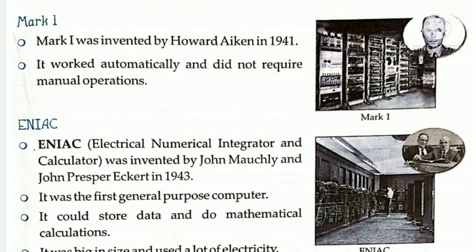What is Mark 1? Mark 1 was invented by American physicist and computer pioneer Howard Aiken in 1941. It worked automatically to do calculations at a fast speed and did not require manual operations. Mark 1 को एक American physicist and computer pioneer Howard Aiken ने 1941 में invent किया था. यह बहुत fast speed से calculations automatically करता था और इसमें किसी भी manual operation की कोई जरूरत नहीं थी.